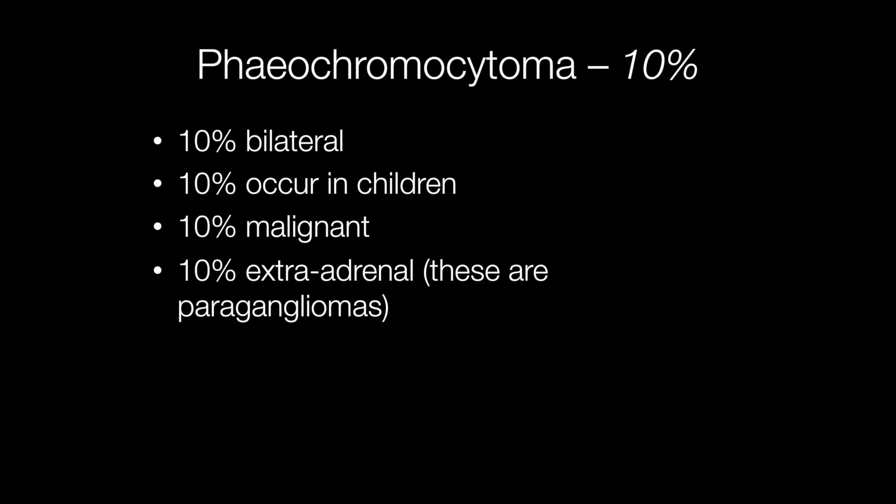A simple way of remembering the frequency of occurrence of various features of pheochromocytomas is the 10% rule. Approximately 10% are bilateral, although bilaterality is more frequent in familial cases. 10% occur in children, and around 10% are malignant.